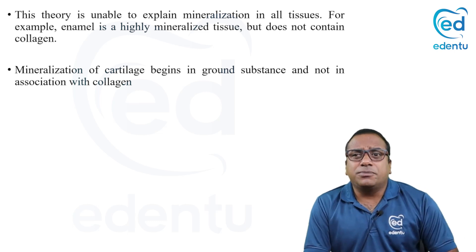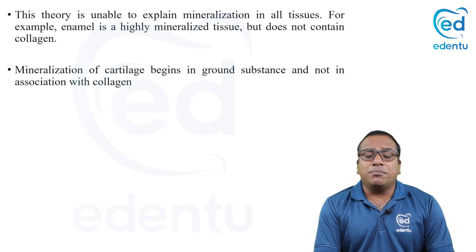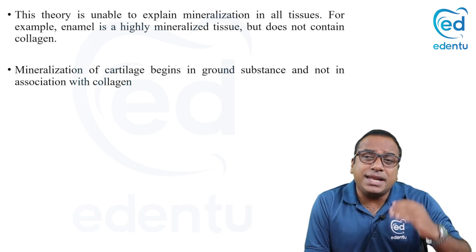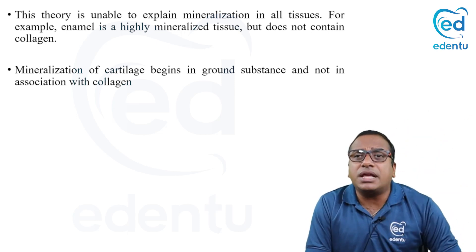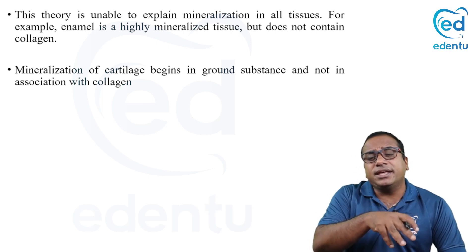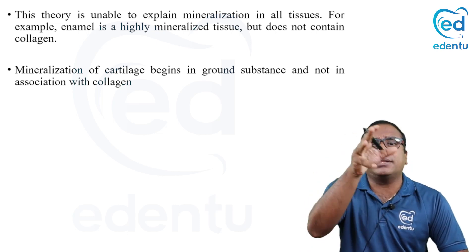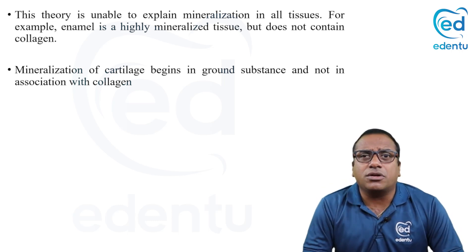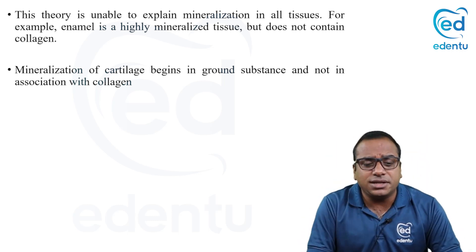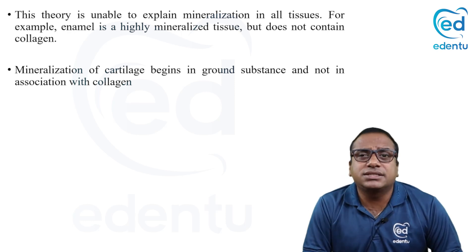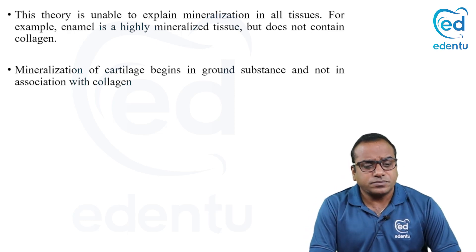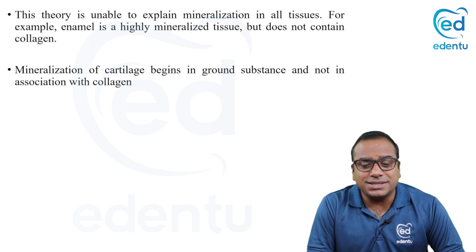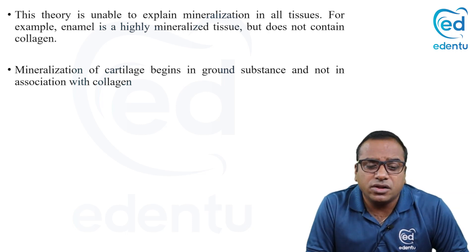Collagen is the most important seed playing a significant role in mineralization, and certain amino acids also come into action. Calcium and phosphate ions in extracellular fluid bind to these sites to form hydroxyapatite crystals, growing further by addition of more ions. Amino acids like lysine and hydroxylysine also actively participate. However, this theory has a drawback: enamel is a highly mineralized tissue but does not contain collagen. Also, mineralization of cartilage begins in the ground substance, not in association with collagen.